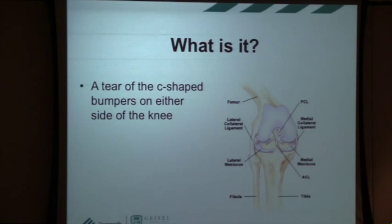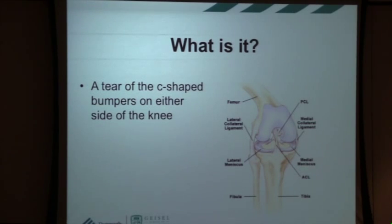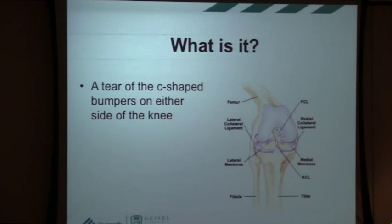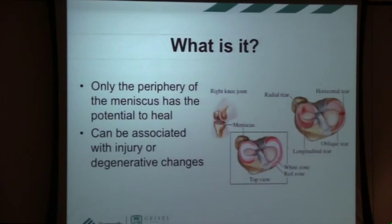So what are these things? The menisci are two bumpers essentially that live in your knee. They have a couple of functions: they spread out the force in your knee and provide some degree of restraint — predominantly acting to spread out the forces you see with load bearing. You have one on the inside and one on the outside of your knee. Other structures you commonly hear about include the ACL, PCL, and the collateral ligaments on either side that stabilize the knee.